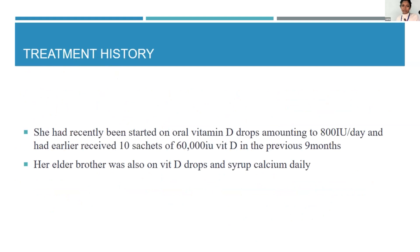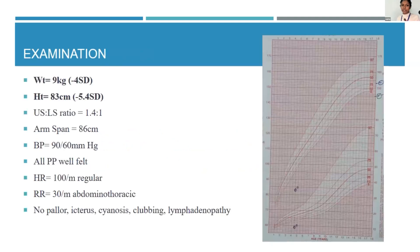Regarding prior treatment, the younger child had been treated only with vitamin D supplementation and calcium from elsewhere prior to presentation, and the elder sibling had also received supplemental doses of calcium and vitamin D. On examination, this child had a weight of 9 kg — at minus 4 standard deviations — and a height of 83 cm at minus 5.4 standard deviations, with a very delayed upper-to-lower segment ratio of 1.4. Vitals were otherwise normal.